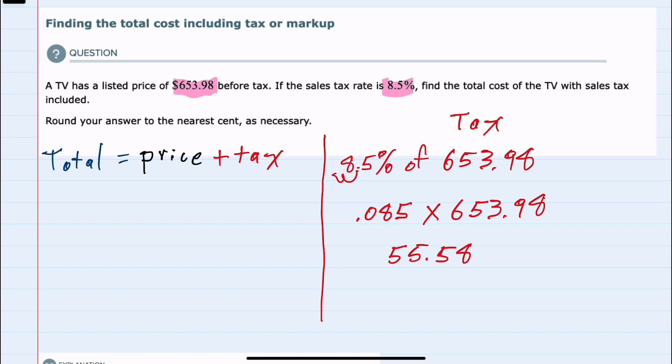And that gives us 55.5883. We were told to round to the nearest cent. And since this is the place value for the nearest cent, looking at the 8 behind that, I would actually round this to $55.59.